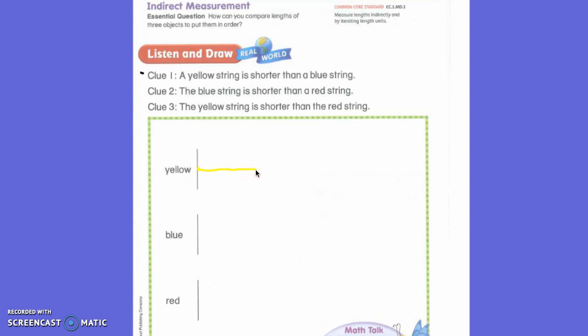Do it with your crayon, yes. So we decided that the yellow line would be short because it said the yellow string is shorter than the blue string.